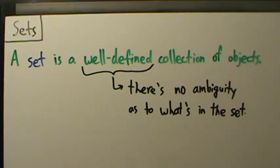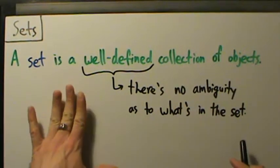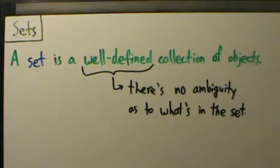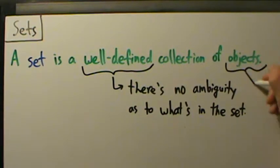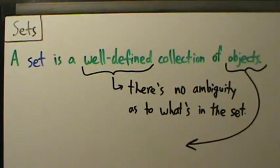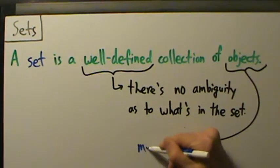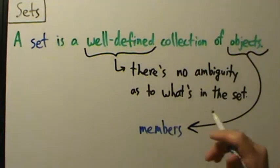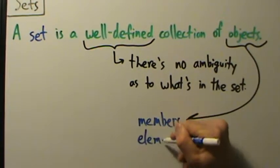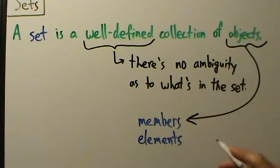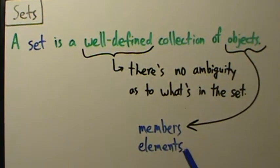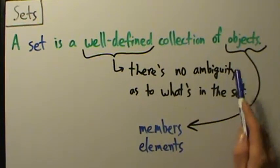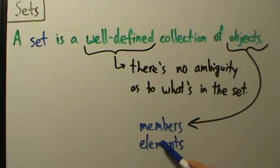When we talk about these objects, if we have a mathematical set—a well-defined collection of objects—these objects are typically referred to as members. We talk about members of a set, or we call them elements. If we're talking about a set in a mathematical context, remember it's just a well-defined collection of objects, but these objects are typically called members or elements.